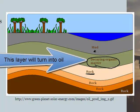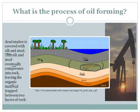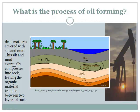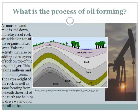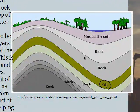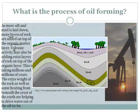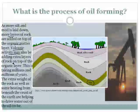We've got this decaying organic matter caught between rock and mud. It's important that there's no oxygen - no O2 - involved, otherwise it would just oxidize into the air. Without oxygen, oil can form. Notice that the layers are kind of tilted, which is caused by compression from plate tectonic activity. As more silt and mud is laid down, more layers of rock are added on top of the organic matter.